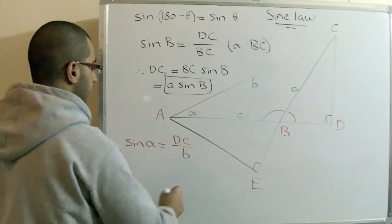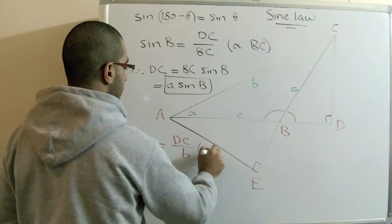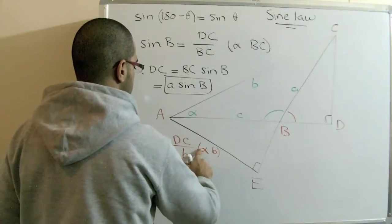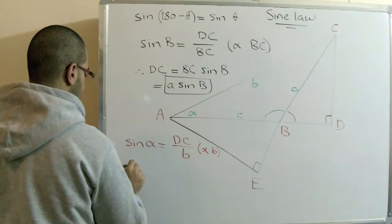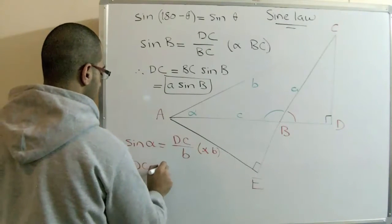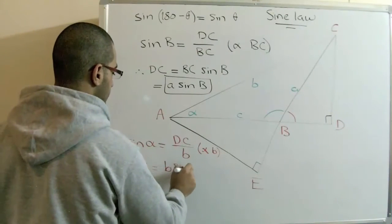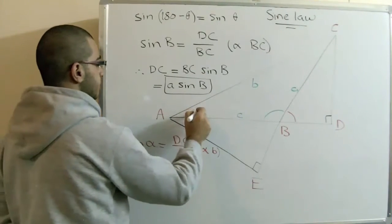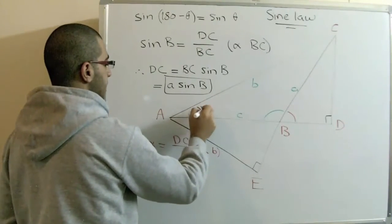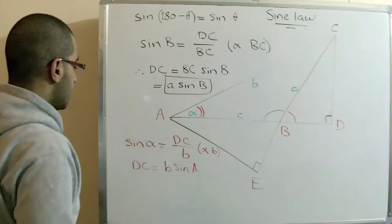And by multiplying the expression by B, we get DC equals B sin A. Because A equals alpha, we give it the symbol alpha here. So here we have two values of DC.